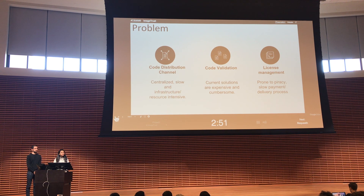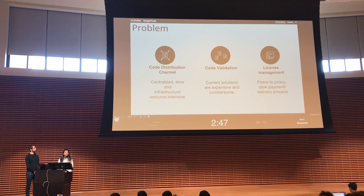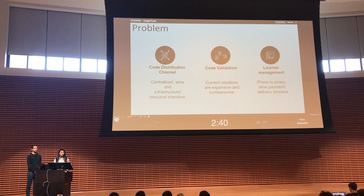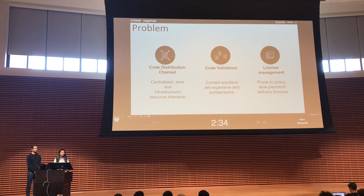The third problem is that when it comes to licensing software, there's a lot of piracy that happens. Also, from when a developer or a company releases software to when you actually get incentivized for that package, the time is quite long, and it leads to over-licensing and under-licensing issues.